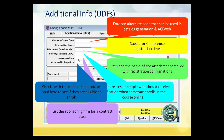Sponsoring firm — mainly for contract programs — you can link that to the firm's table. Membership requisites is where you can specify that a student must be a member to take the class. This is particularly relevant for OSHER lifelong learning folks, because OSHER classes are typically limited to members — you cannot register for the class unless you are a member of the OSHER group.